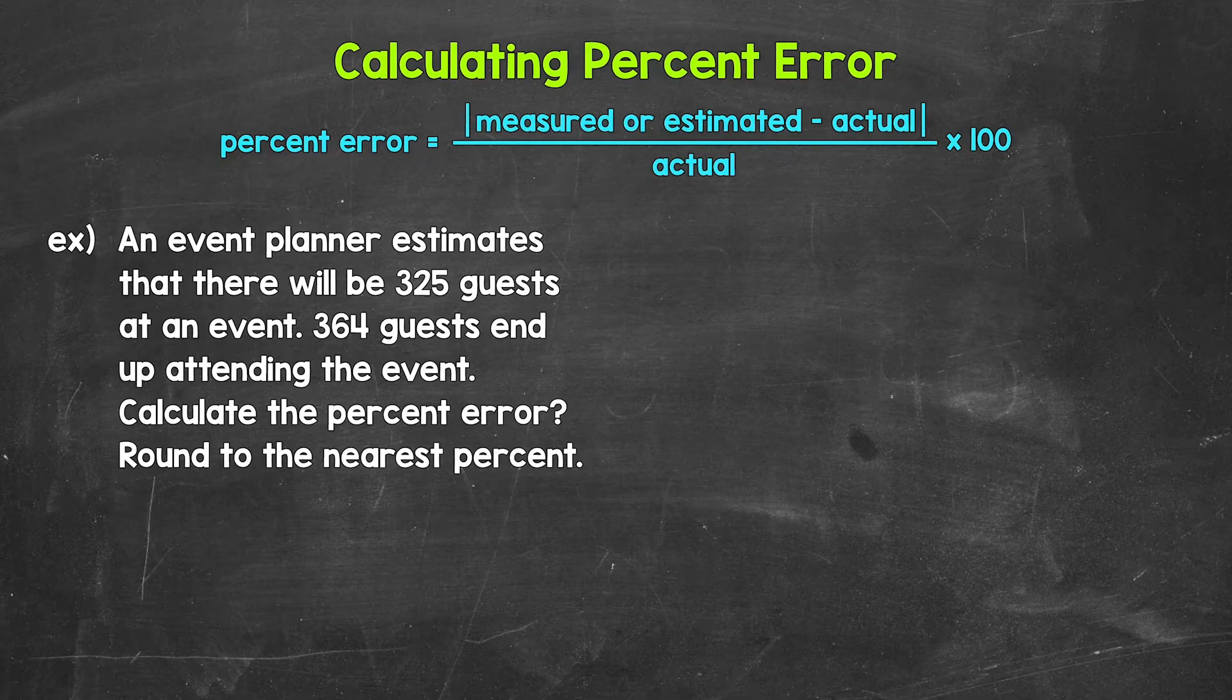Let's jump into our example where an event planner estimates that there will be 325 guests at an event. 364 guests end up attending the event. Calculate the percent error. Round to the nearest percent.